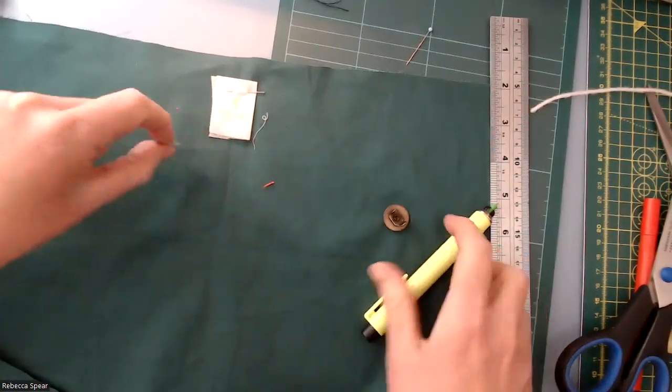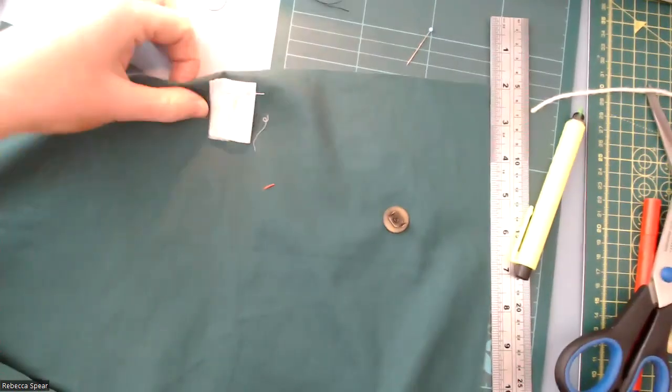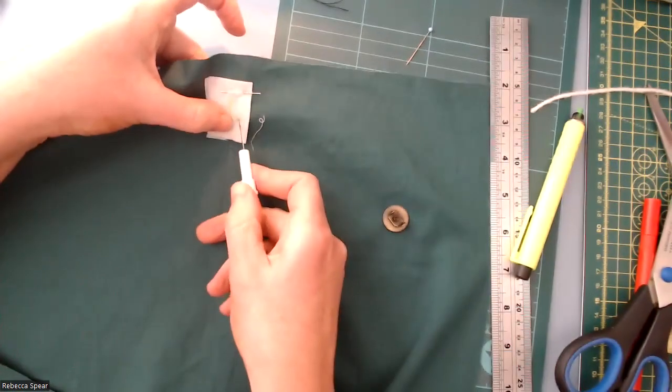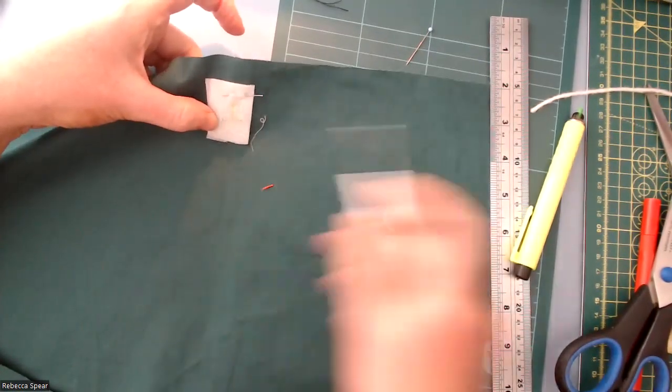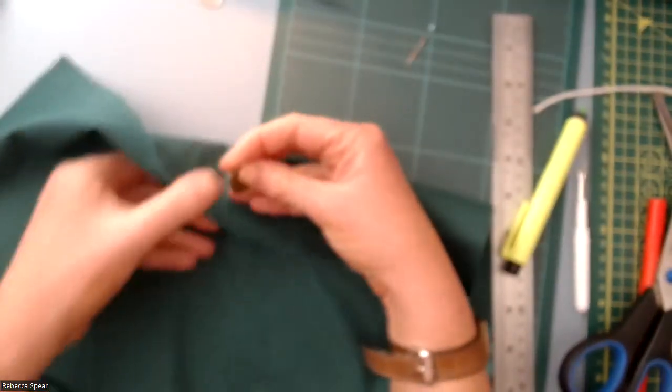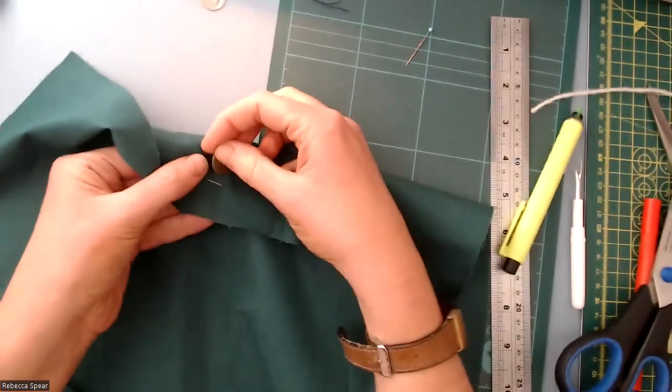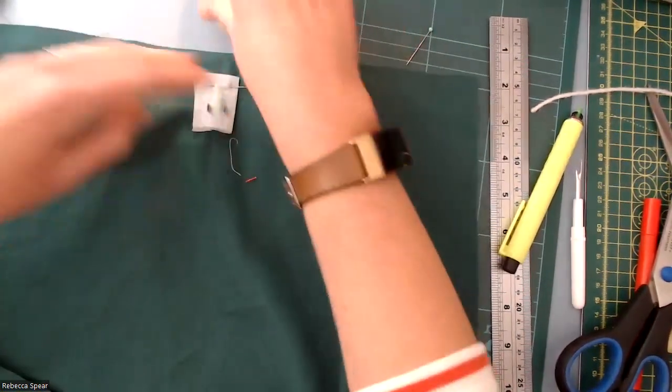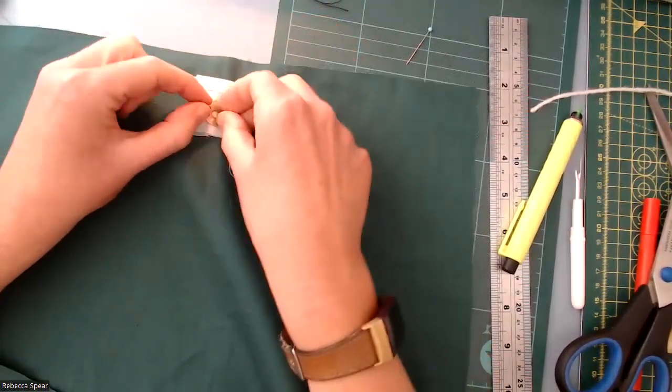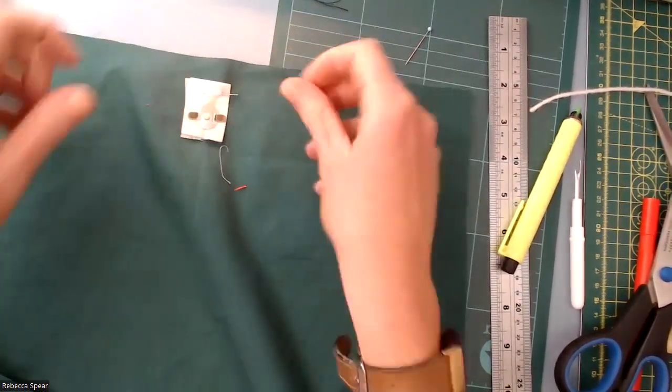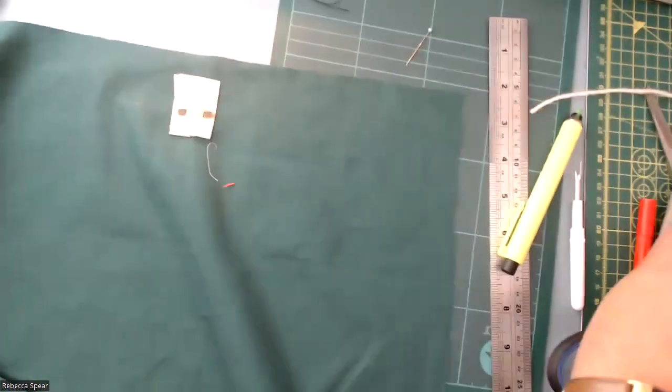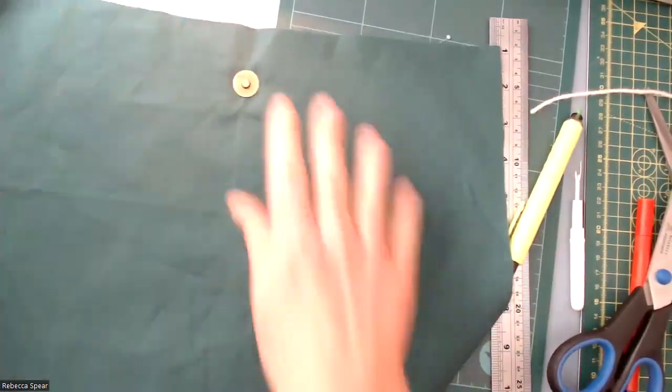And then we are going to, with an unpicker, just make a small incision through those gaps from the front of your lining, the right side of your lining, push those prongs through, place your plate on the back, and push those out. And then what we've got there is both sides of our magnetic snap on our bag.